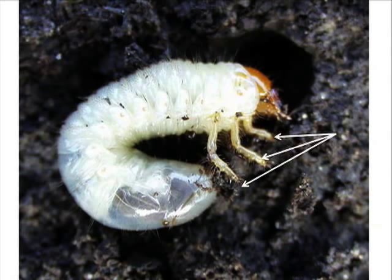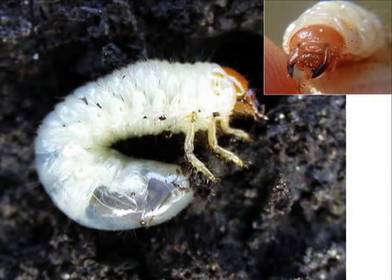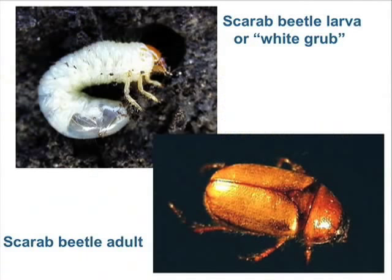White grubs also all have three pairs of legs. A well-developed head is also an important characteristic of all white grubs. If you take a look at the head with a magnifying glass, as we've done in the upper right-hand corner here, you can see the powerful mandibles, or jaws, that are responsible for tearing precious turf roots to shreds.